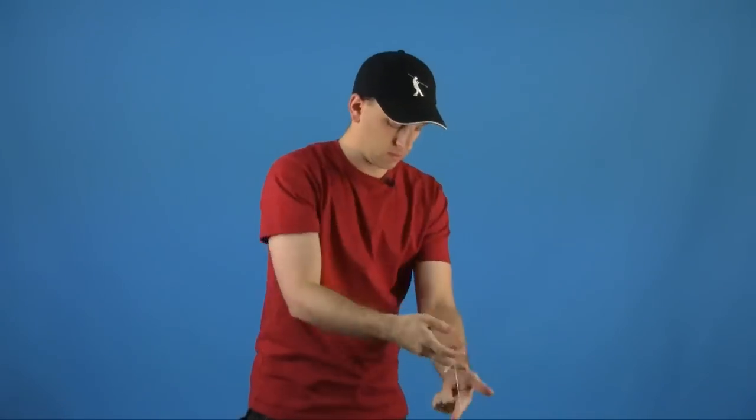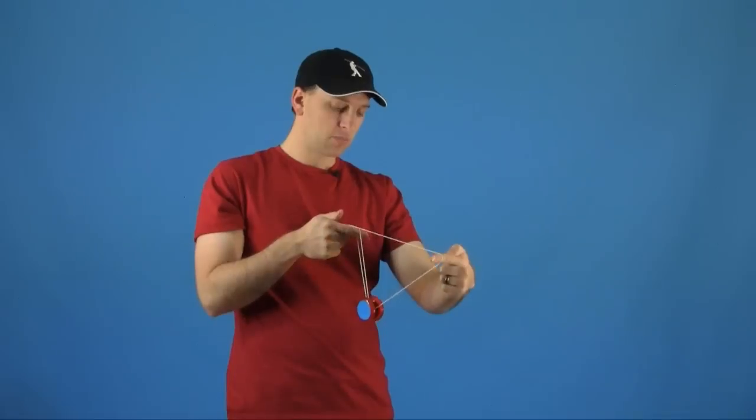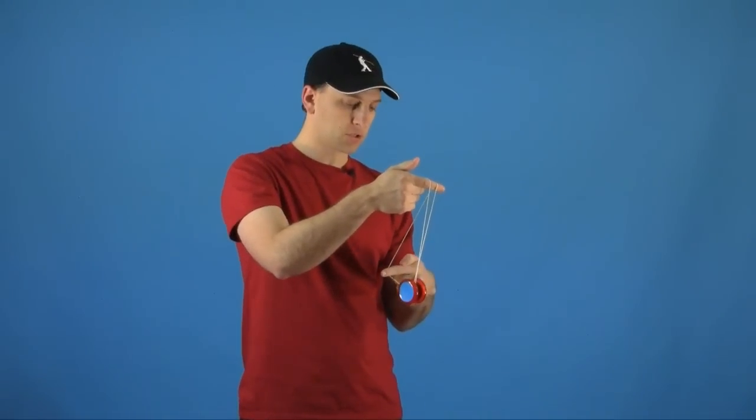Now to start this trick, you're going to start off with your Split Bottom Mount, and then you're going to take your opposite hand and you're going to pass it right underneath the yoyo and catch the yoyo on that string.